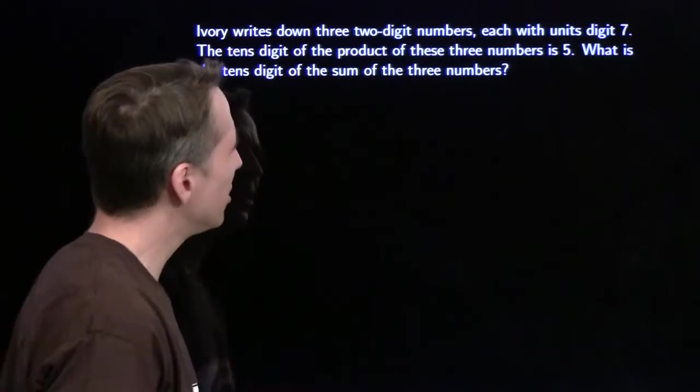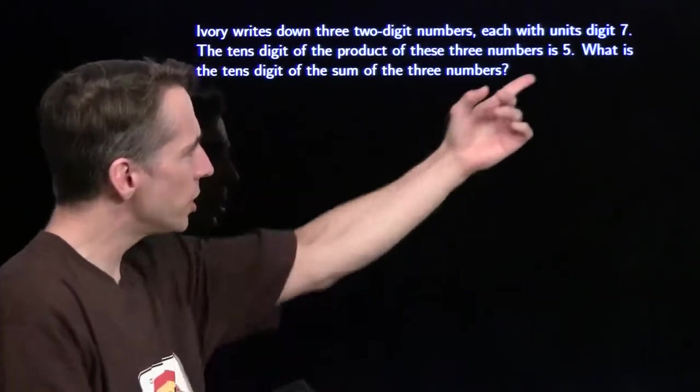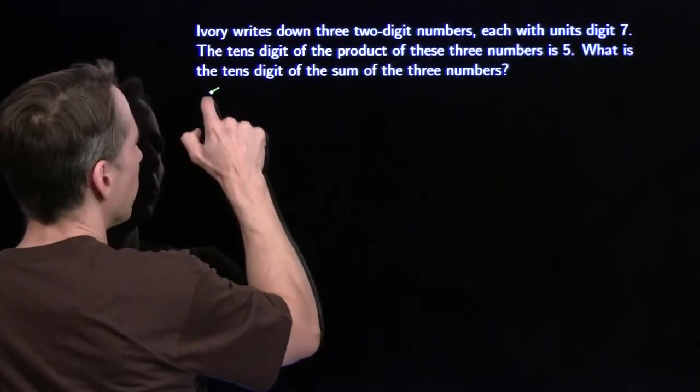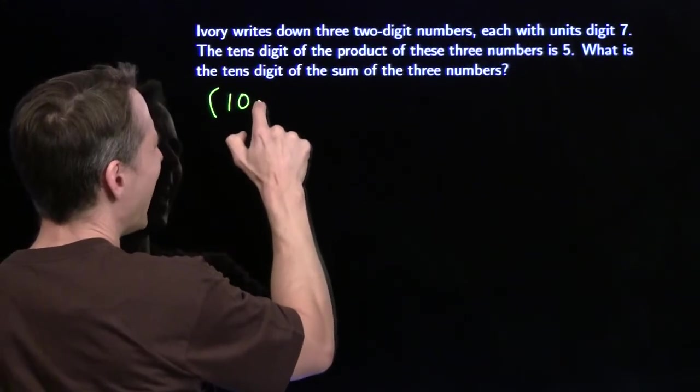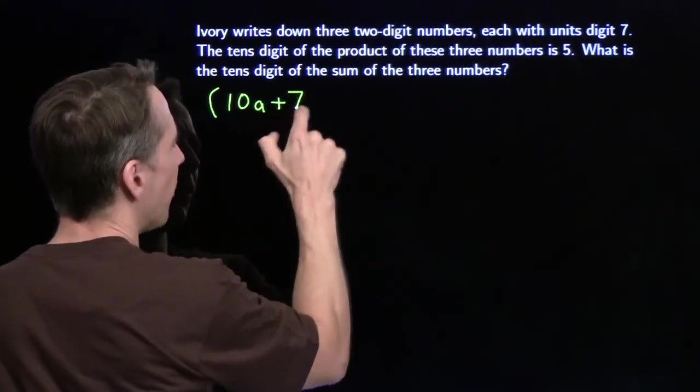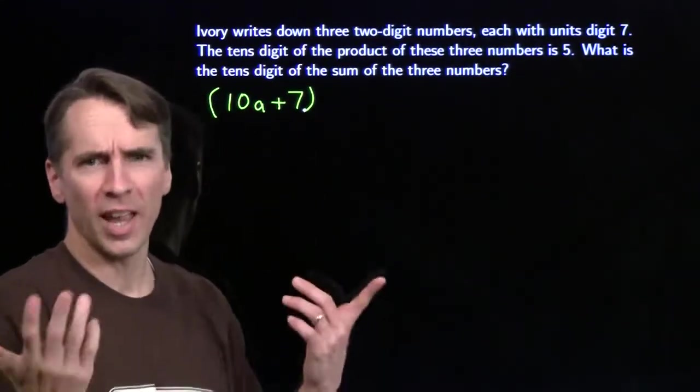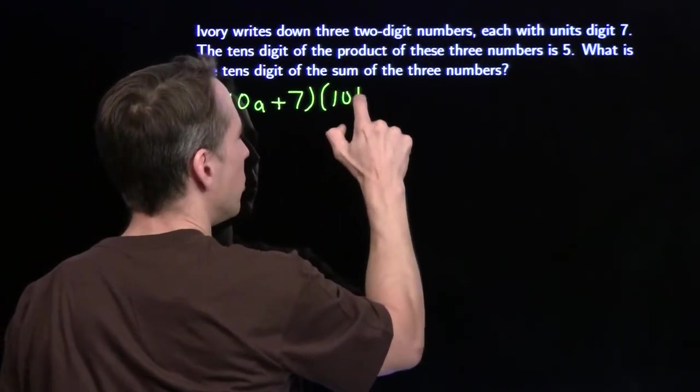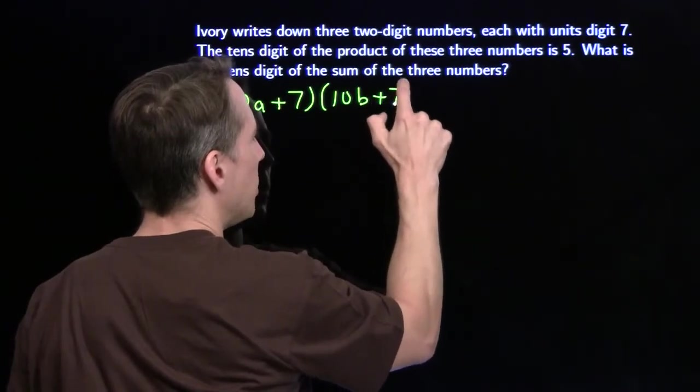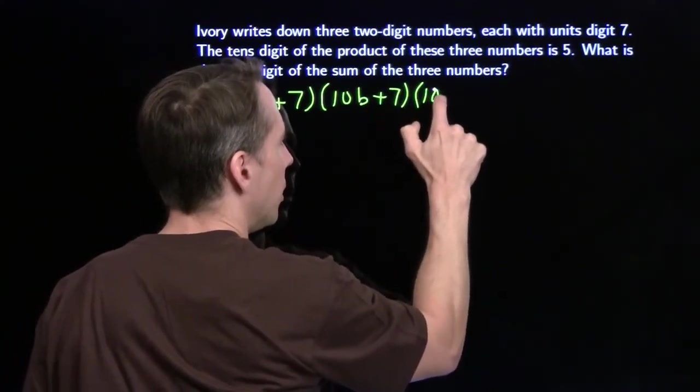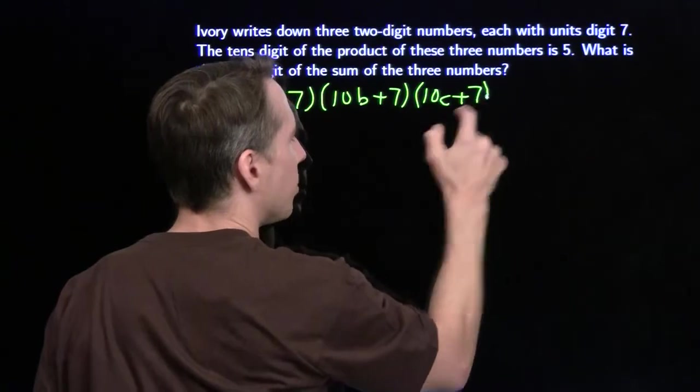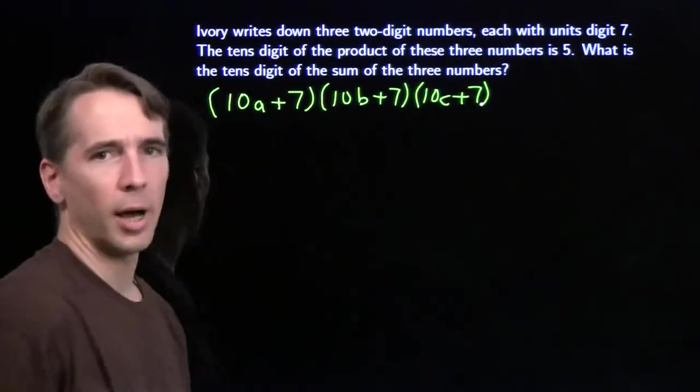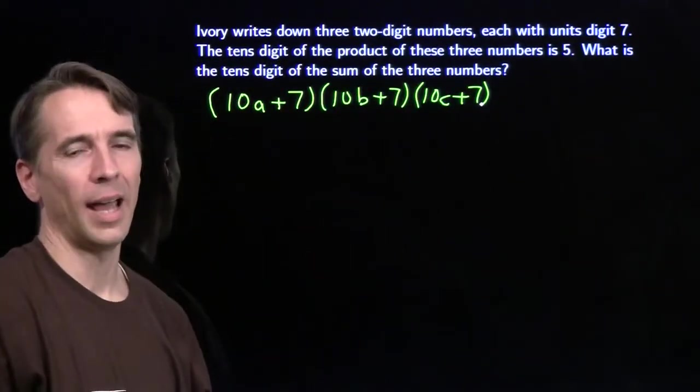First we have to write down these two digit numbers with units digit seven. Start the first one. We'll just call that 10a plus seven, where a is that tens digit. So, if a is five, then this number is fifty-seven. The second two digit number with units digit seven will be 10b plus seven, and naturally the third will be 10c plus seven. So there's my product. We need to multiply this all out.